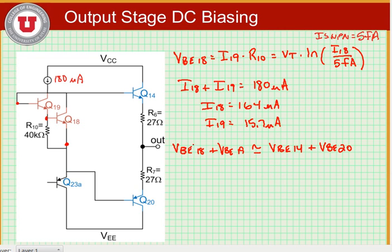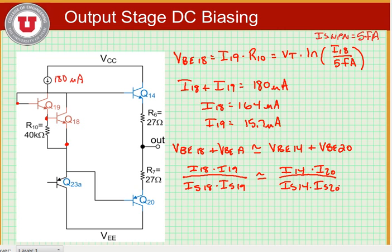Now if we substitute our expressions for VBE in terms of the current, we can write the following expression. I18 times I19 divided by IS18 times IS19 is approximately equal to I14 times I20 divided by IS14 times IS20. This involves some manipulation of the logarithms involved in these expressions, but you should be able to find this expression fairly easily.